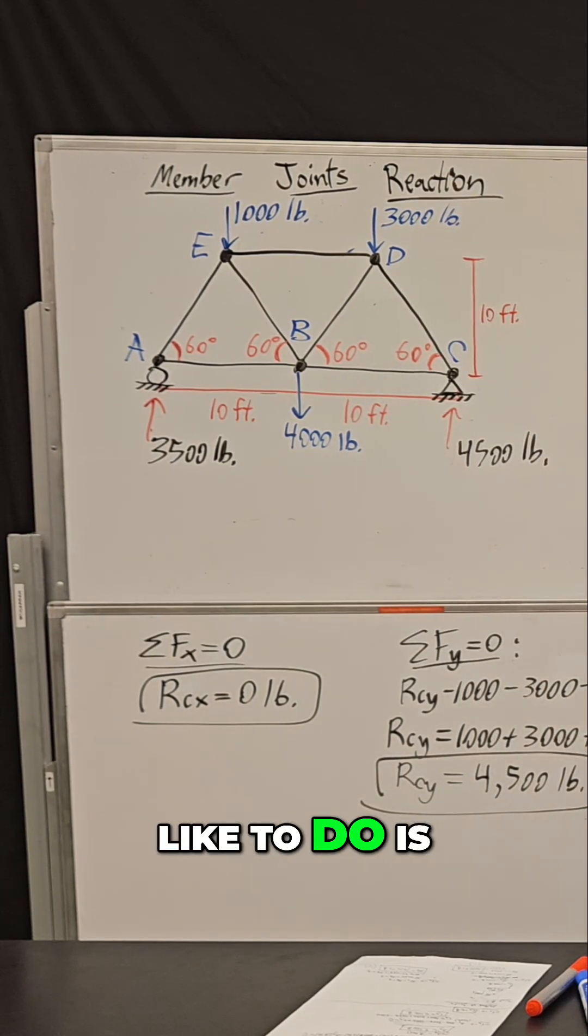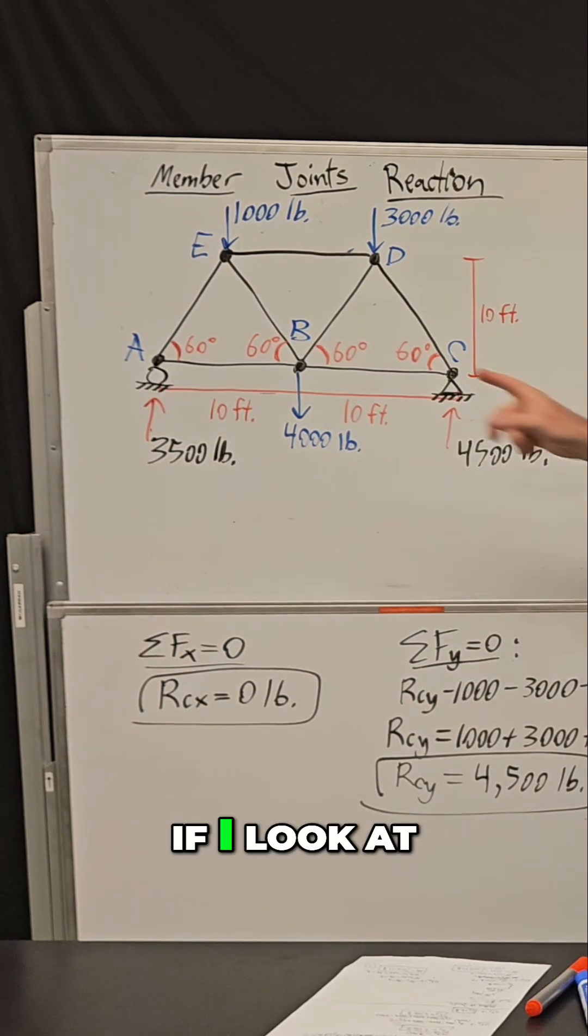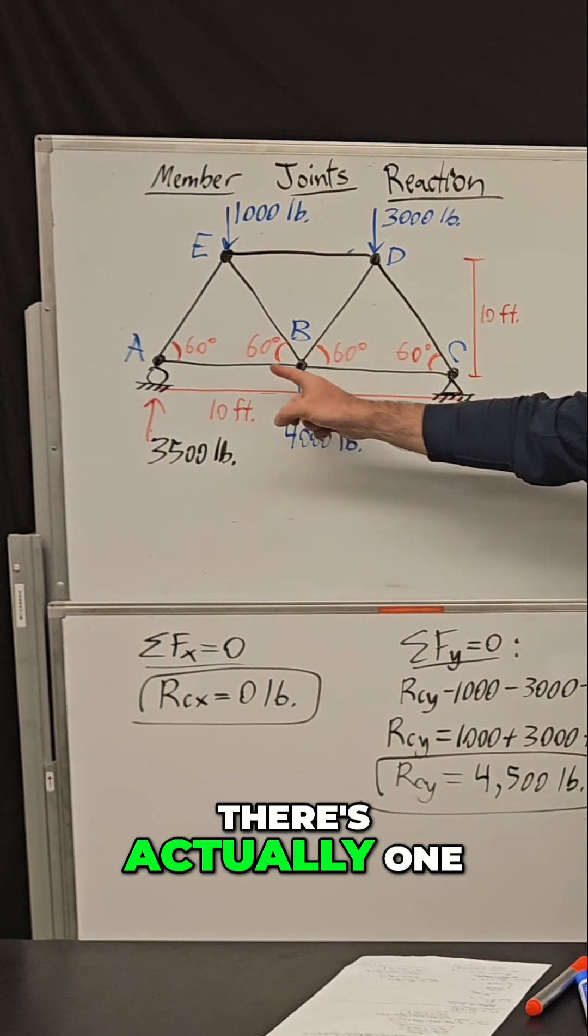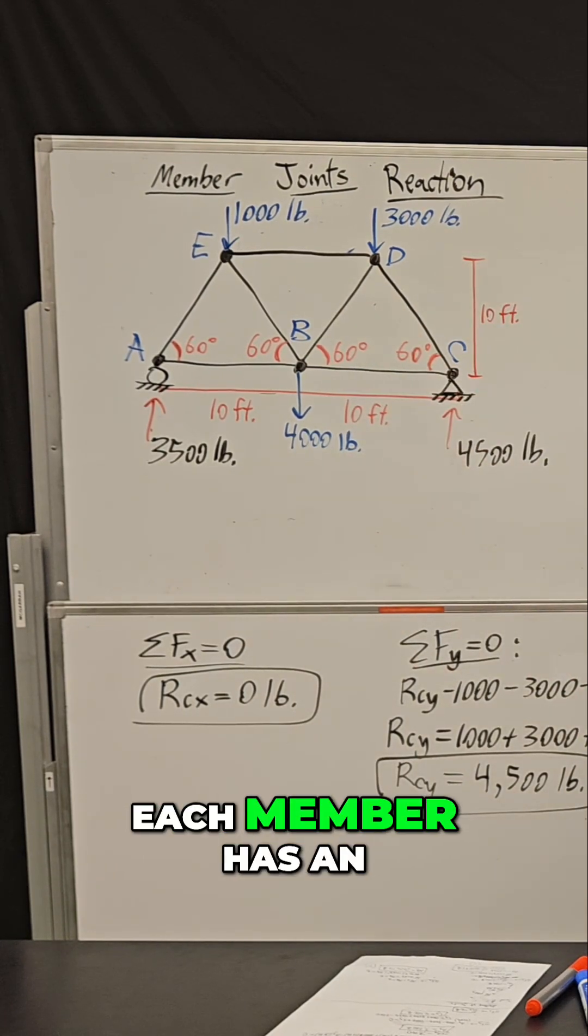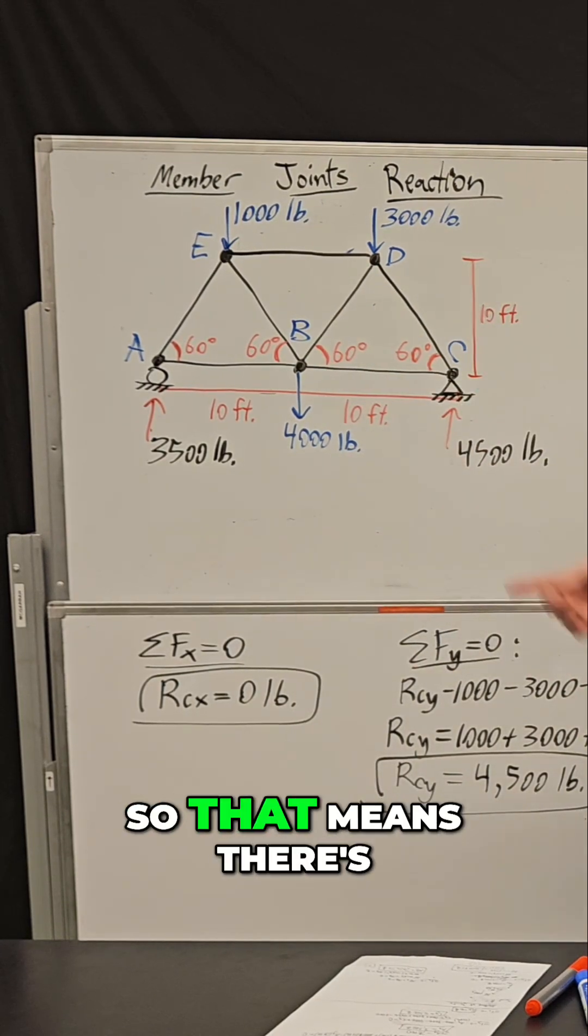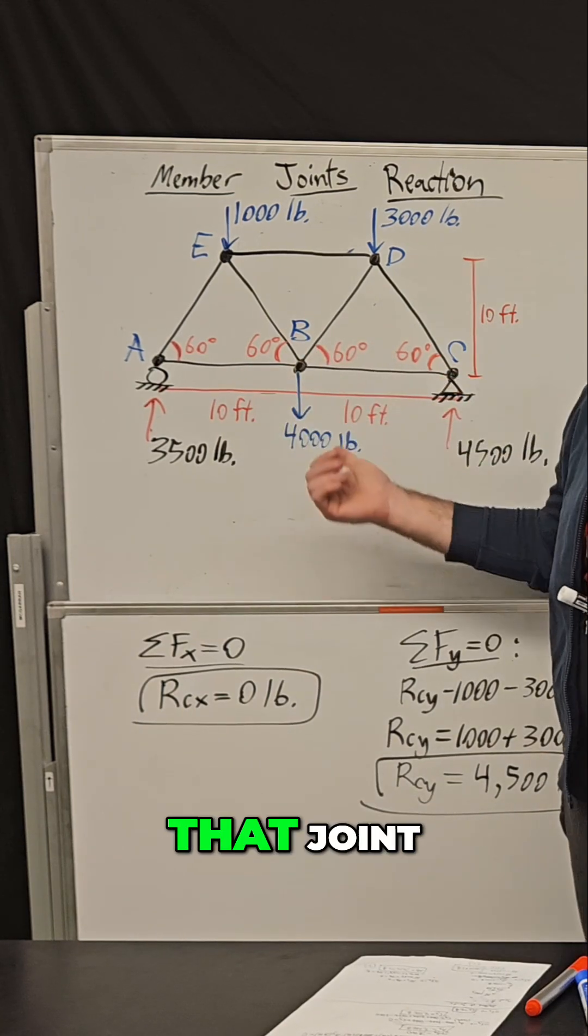And so what I like to do is start at the joint with the least amount of traffic. So for example, if I look at joint B, there's actually one, two, three, four members all coming together at that joint. And remember, each member has an unknown force inside it. So that means there's four unknown forces at that joint.